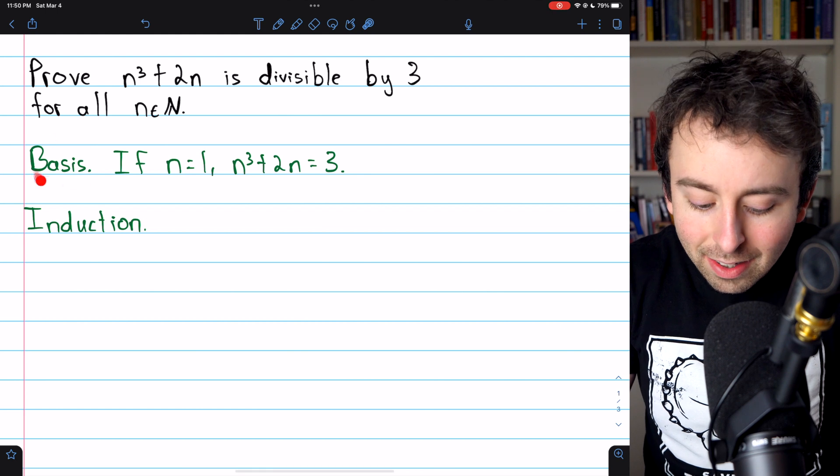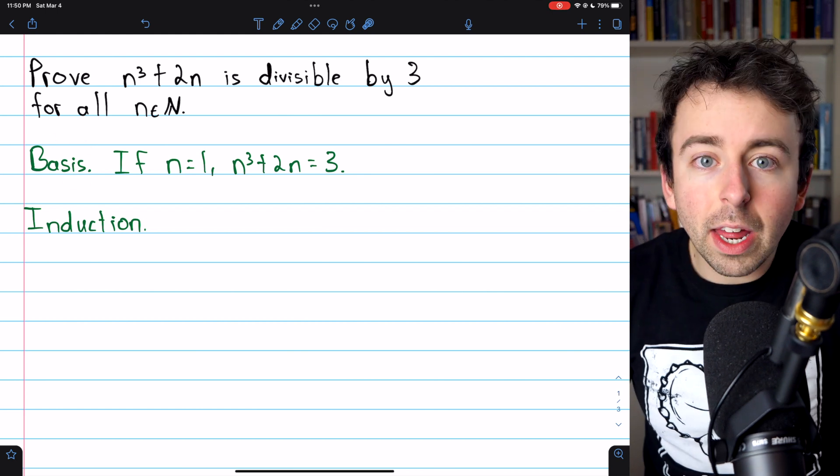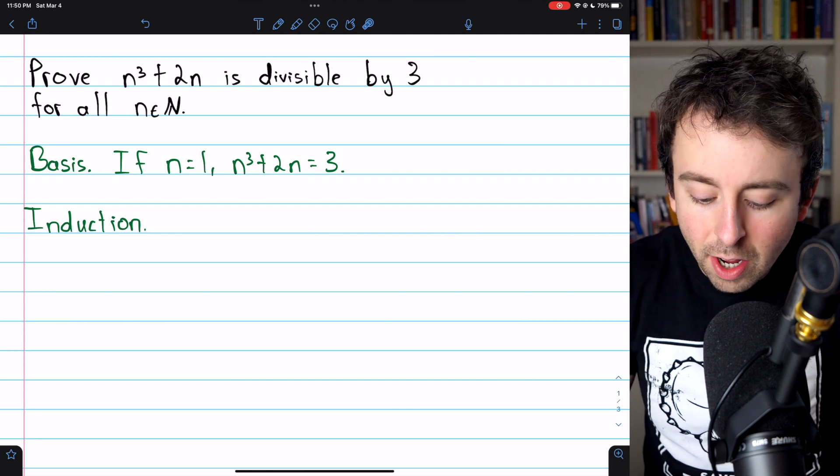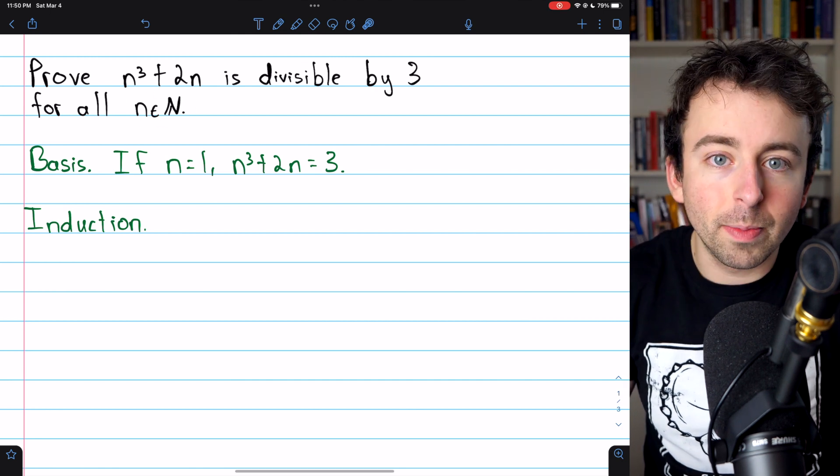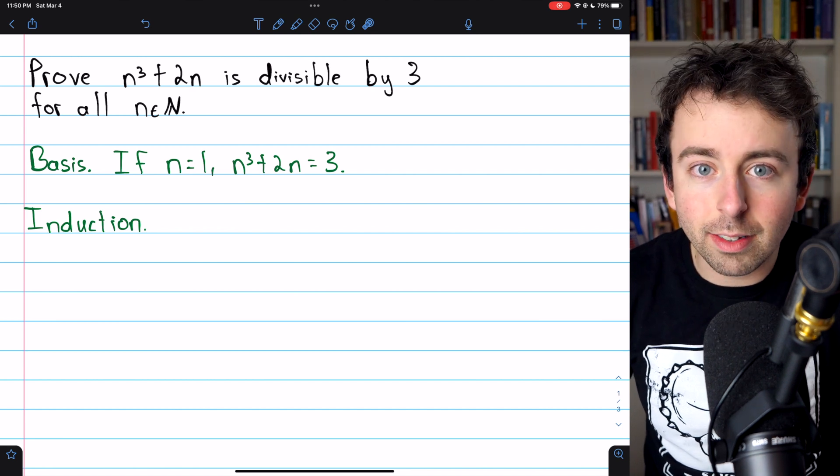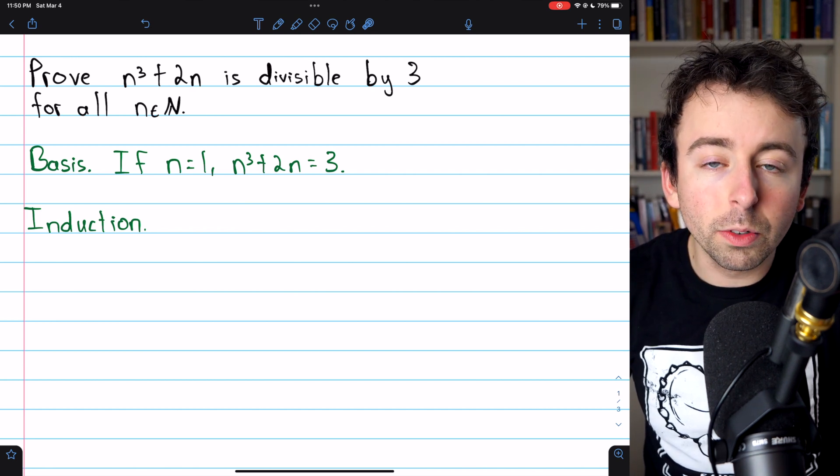This begins with the basis step, where we prove that our statement is true for the first number of interest. Since we're talking about positive integers or natural numbers, the first number of interest, which will be addressed in the basis step, is n equals 1.